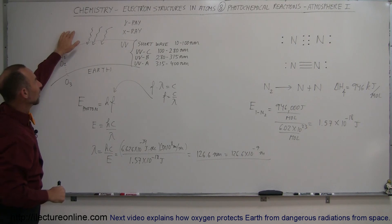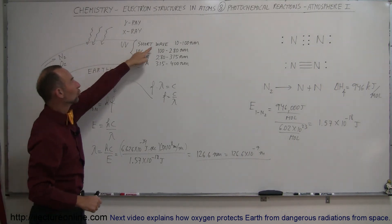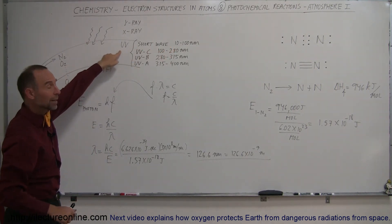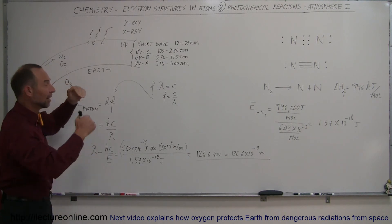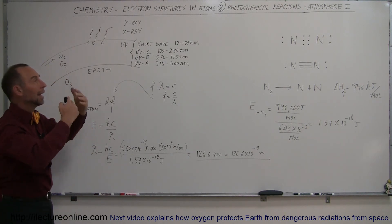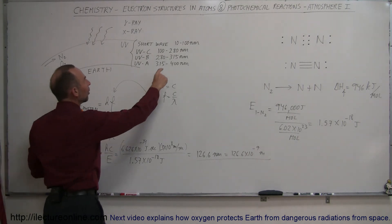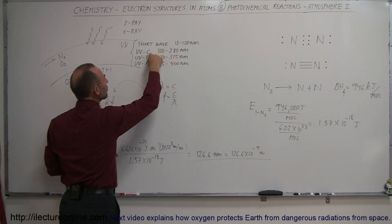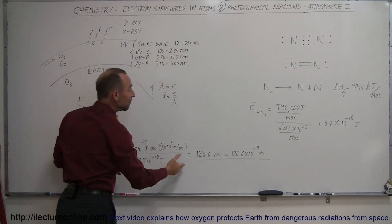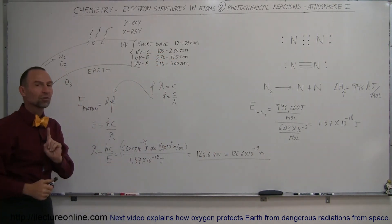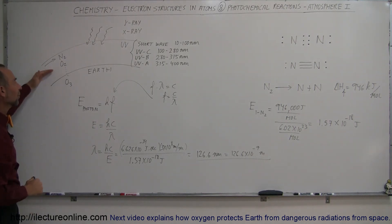X-rays, gamma rays, and the very shortwave radiation of UV radiation, when they hit nitrogen gas, those energies are absorbed and the nitrogen molecule is dissociated in a photochemical reaction, keeping us safe. What about the ones that have longer wavelengths like UVC, UVB, and UVA? They make it through the nitrogen, but there are other defense mechanisms in our atmosphere, which we'll show you in the very next video.